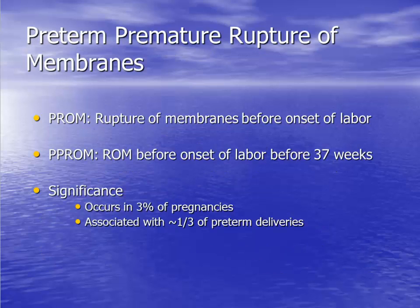Let's discuss preterm premature rupture of membranes, or PPROM. This is defined as rupture of membranes that occurs before the onset of labor in patients less than 37 weeks. It is a significant cause of preterm birth.